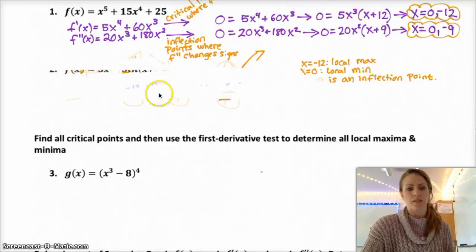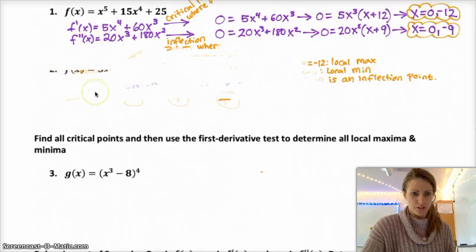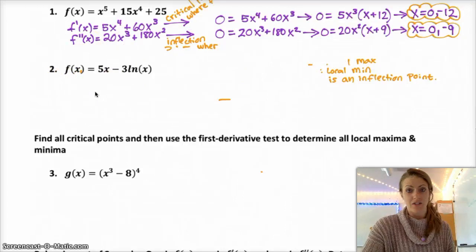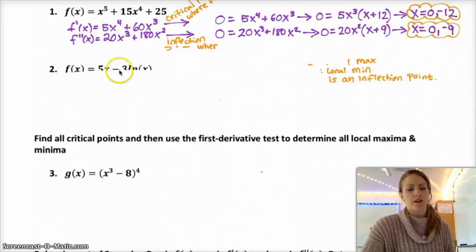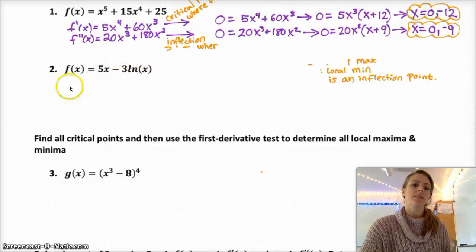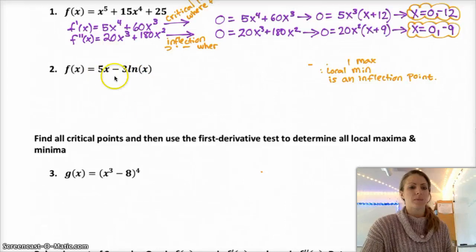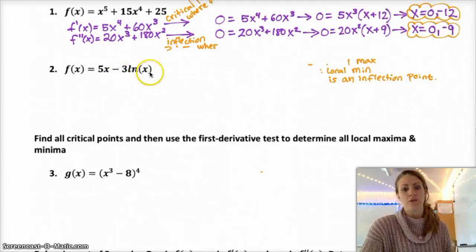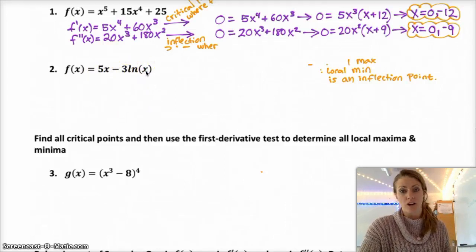Question two is the same question but for the function 5x minus 3 times the natural log of x. I did this because I wanted to refresh your memory of the derivative of natural log, which is 1 over x.